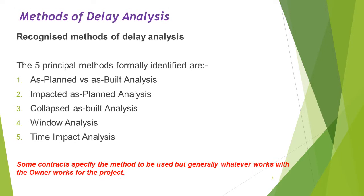There are five principal methods: the As Planned versus As Built analysis; an Impacted As Planned analysis; Collapsed As Built analysis; a Window analysis; and a Time Impact analysis. It should be noted that some contracts in fact specify the method to be used, but it can generally be said that whatever method works for the owner works for the project.